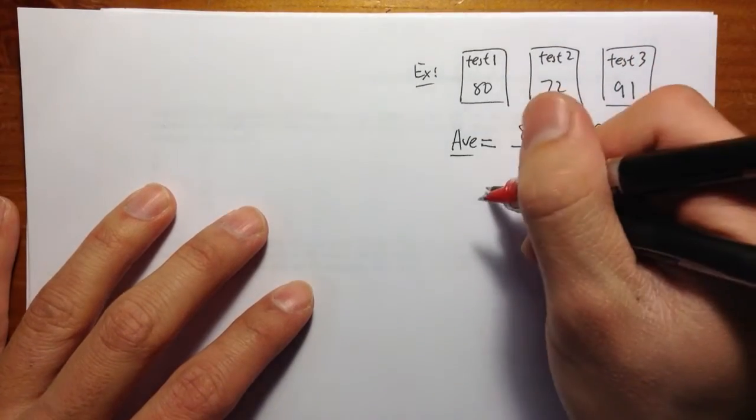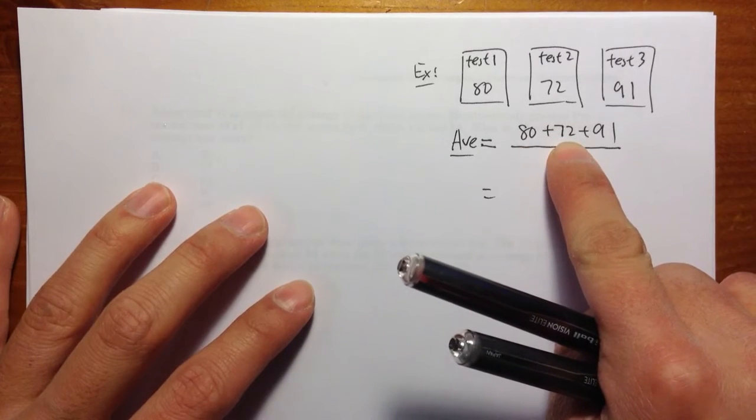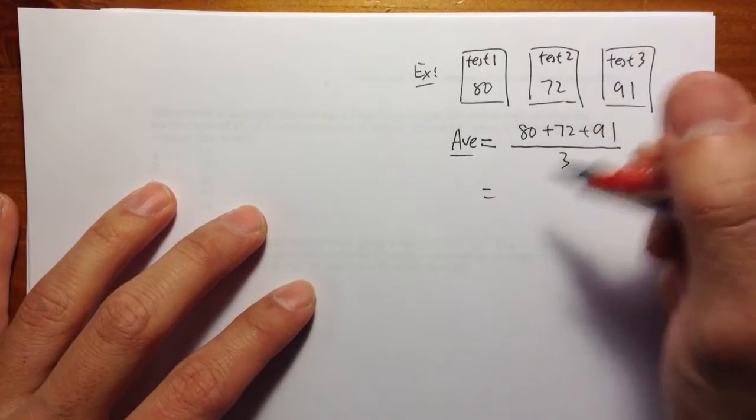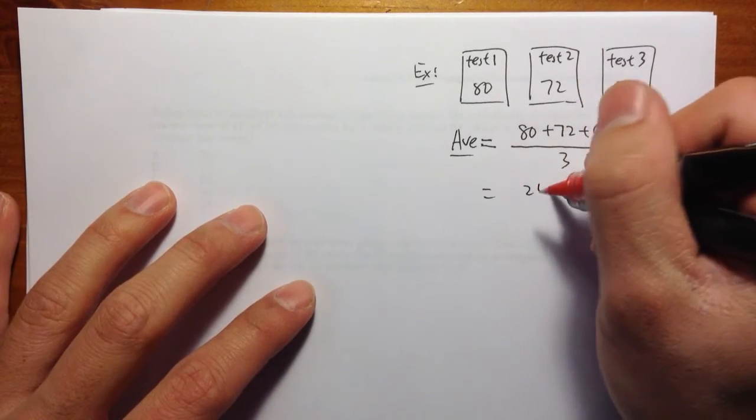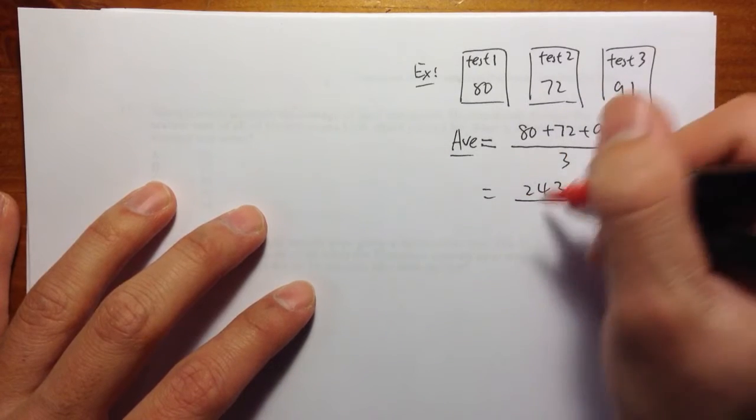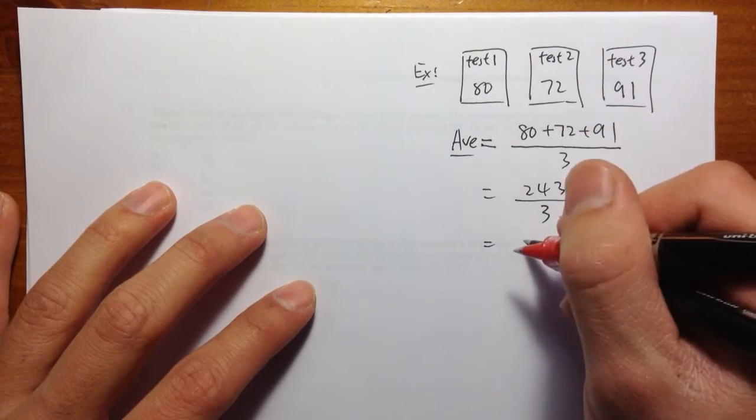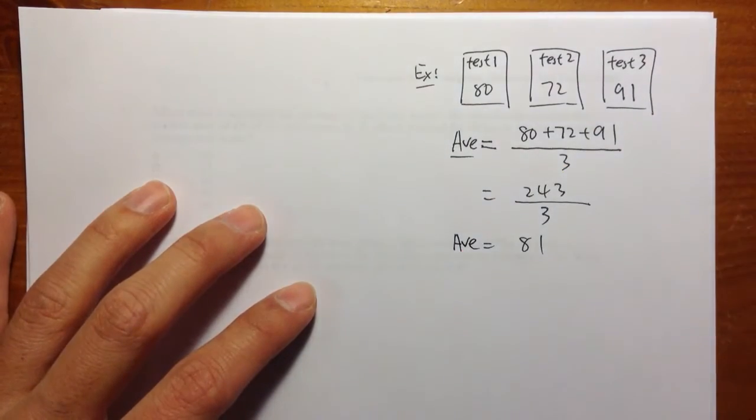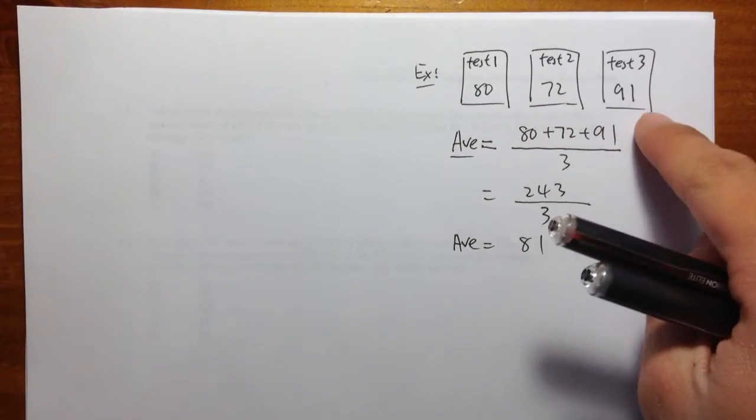So we have 80 plus 72 is 152. 152 plus 91. So we have 243 over 3. So 243 divided by 3, that's 81. So the average of his test score is 81 points.